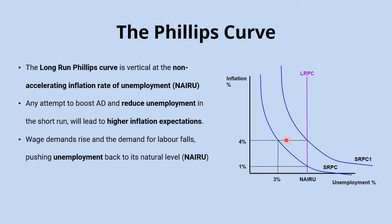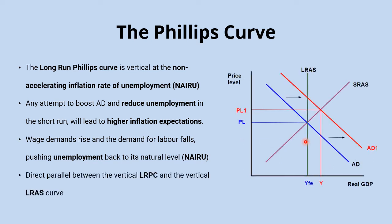So the short-run Phillips curve has now shifted back towards the right. You might think this sounds familiar to the classical long-run aggregate supply curve, and that's absolutely right. It's the same forces that cause rising GDP and price level in the short run when aggregate demand increases, and then returning to full employment output in the long run at the vertical long-run aggregate supply curve.